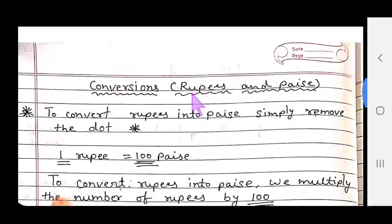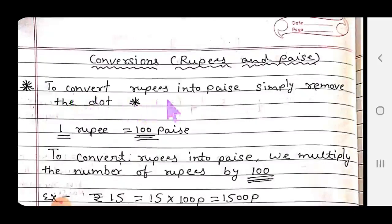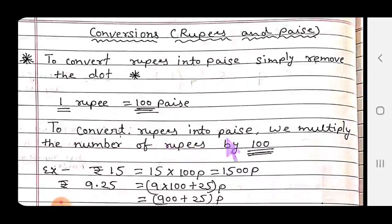In activity 2 you will learn conversions - how to convert rupees into paise and paise into rupees. First rule to convert rupees into paise: remove the dot. The dot tells you that the right side number is paise and left side number is rupees. You should remember that one rupee equals 100 paise. To convert rupees into paise, we multiply the number of rupees by 100.